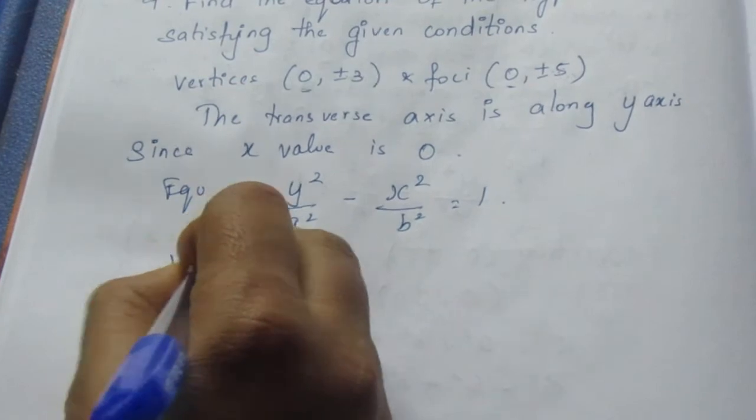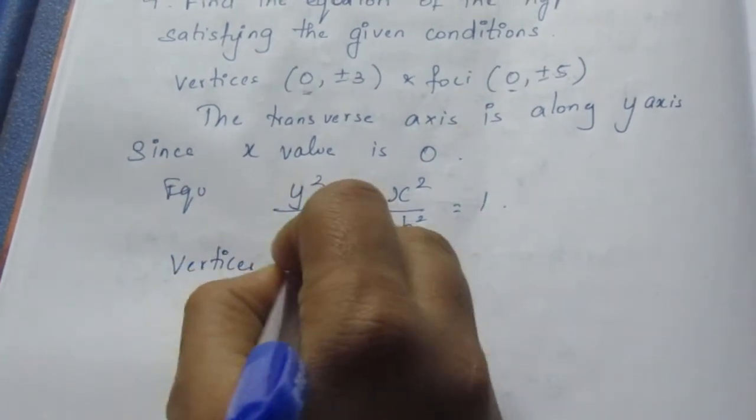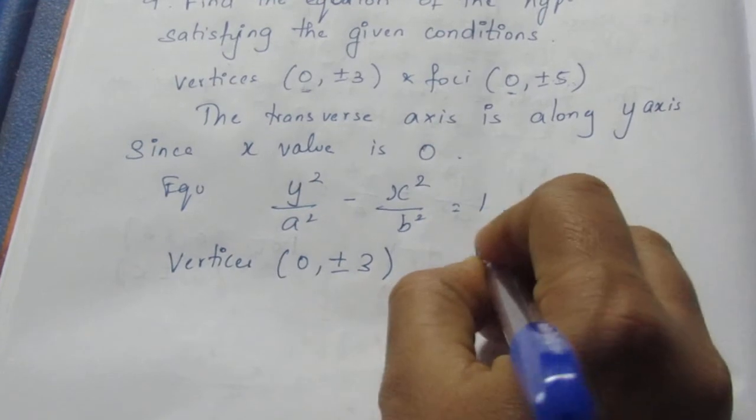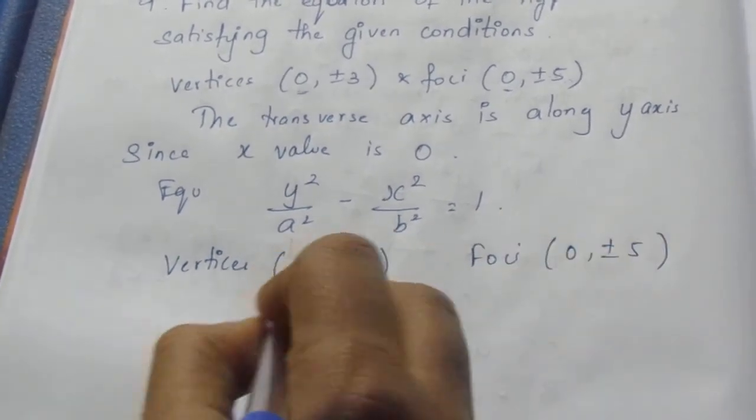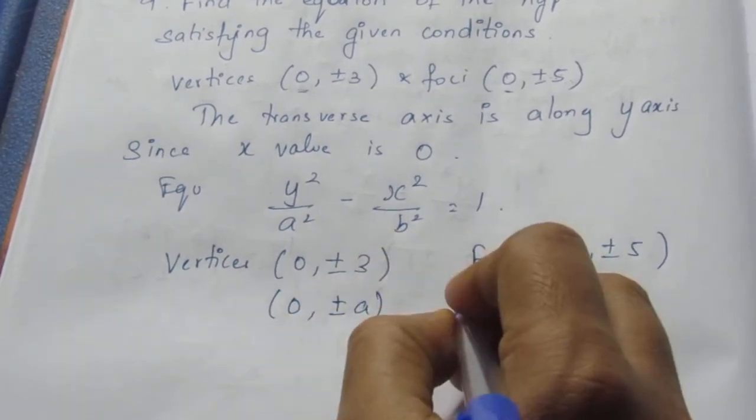They have given vertices. So vertices here we have (0, ±3) and foci (0, ±5). So vertices is (0, ±a), foci the formula is (0, ±c).